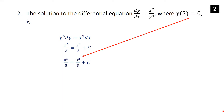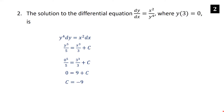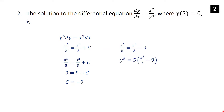Now we need to find c. Substituting 3 for x and 0 for y, we get 0 equals 3 cubed over 3, that's 27 thirds, which is 9 plus c. So c is equal to negative 9. We plug in negative 9 for c to get y to the fifth over 5 equals x cubed over 3 minus 9. Multiplying each side by 5, we get y to the fifth equals 5x cubed over 3 minus 45. Taking the fifth root of each side, y equals the fifth root of 5x cubed over 3 minus 45.